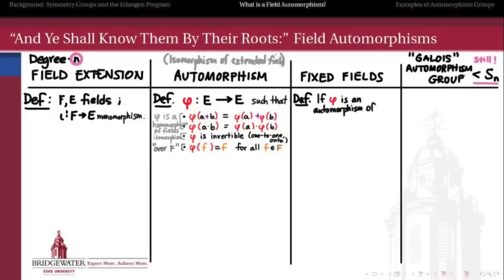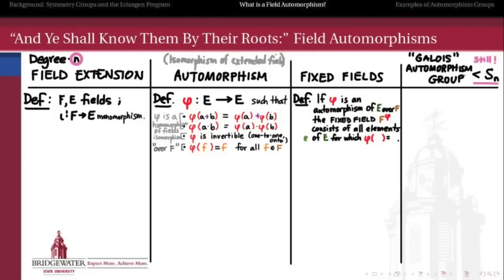Taking the place of the invariants are the fixed fields. If phi is an automorphism of e over f, then the fixed field of phi — denoted f with a superscript phi — consists of everything that doesn't move under phi: all elements of e such that phi(e) = e, i.e., all elements on which phi acts like the identity. Because phi is an automorphism of e over f, every element of f belongs to any of these fixed fields. So the fixed fields are always intermediate between the base and the extended field, helping us understand the structure by revealing intermediate subfields.